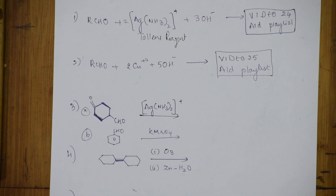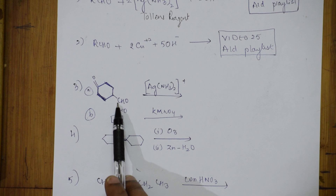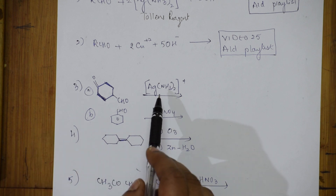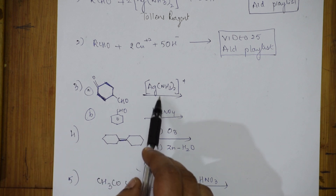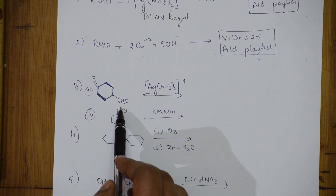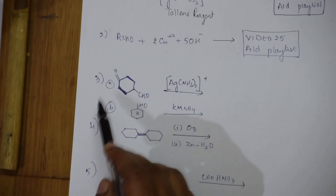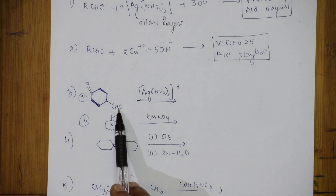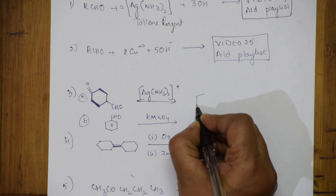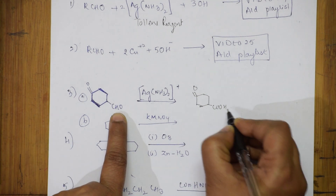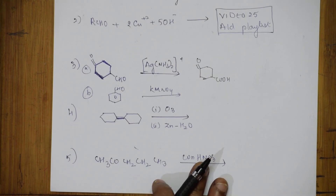Now the third reaction: they've given a cyclo-compound with an aldehyde group on one side and a double bond on the other, treated with Tollens reagent. Tollens reagent is an oxidizing agent, so aldehydes get oxidized to acids. Don't get confused — just remember Tollens reagent oxidizes aldehydes to acids. The double bond stays unchanged; only CHO becomes COOH.